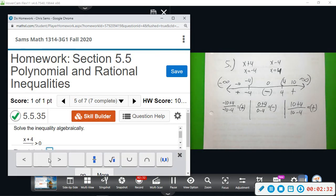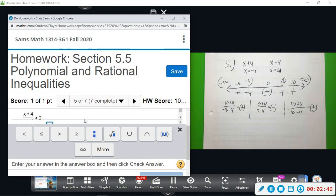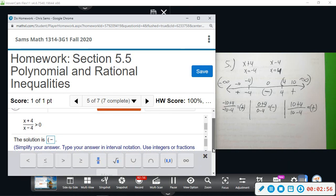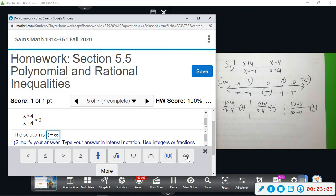Can't even see the answer part here. Alright, so we're going to say parentheses negative infinity, make this a little bit bigger. Alright, parentheses negative infinity to negative four, and then union four to infinity.